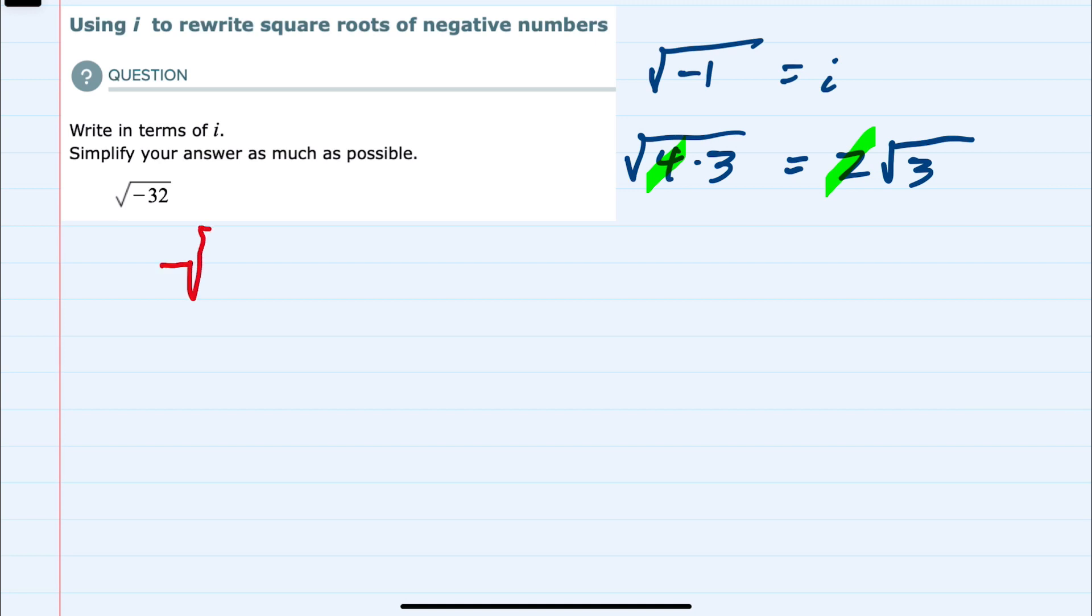With those two ideas in mind, we can rewrite our square root of negative 32 as, first of all, negative 1 times 32. But can we rewrite 32 as perfect squares being multiplied? Our perfect squares being 2 squared, which is 4, 3 squared, which is 9, 4 squared, which is 16. So 16, we can rewrite 32 as 16 times 2.